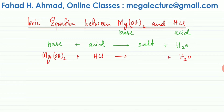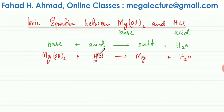A salt is produced when the H in the acid gets replaced by the metal ion from magnesium hydroxide. So Mg knocks out the H, neutralizing the acid, and takes its place. That gives us Mg and Cl. Since Mg has a charge of 2+ and Cl has a charge of -1, using the crisscross method the ionic formula is MgCl₂.